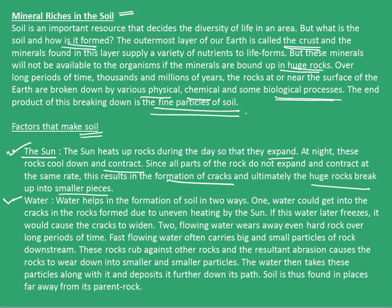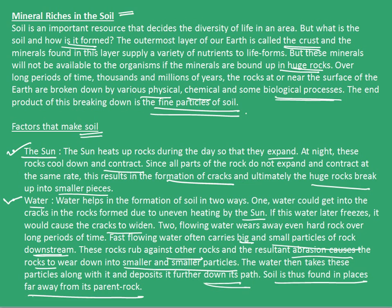The second important factor is water. Water helps in the formation of soil in two ways. First, water could get into the cracks in the rocks formed due to uneven heating by the sun; if this water later freezes, it would cause the cracks to widen. Second, flowing water wears away even hard rock over long periods of time. Fast flowing water carries big and small particles of rock downstream, which rub against other rocks; this abrasion causes rocks to wear down into smaller and smaller particles, which are then deposited further down the water's path. Soil is thus found in places far away from its parent rock.